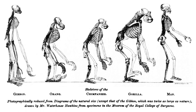The population will continue for more generations because of the success of these individuals. The academic field of population genetics includes several hypotheses and theories regarding genetic diversity. The neutral theory of evolution proposes that diversity is the result of the accumulation of neutral substitutions. Diversifying selection is the hypothesis that two subpopulations of a species live in different environments that select for different alleles at a particular locus.